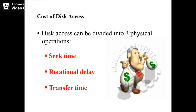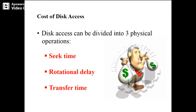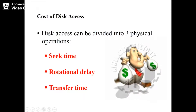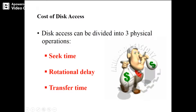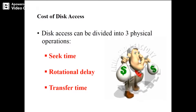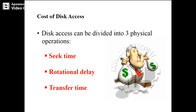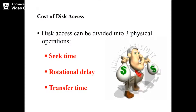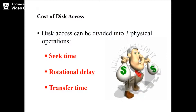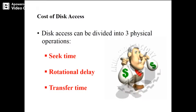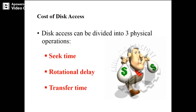We have already seen seek time, rotational delay, and transfer delay while describing sector organization. Let us see how exactly these are a disadvantage of disk organization and how we can overcome this. These three things cause the cost for disk access.